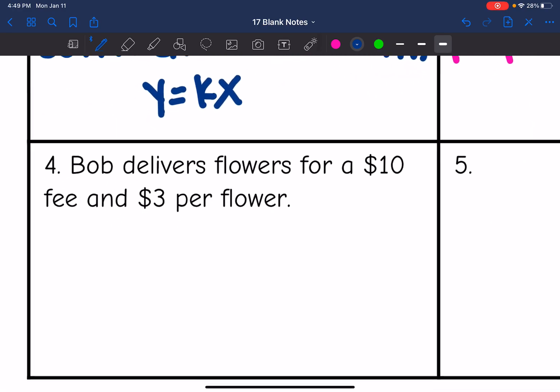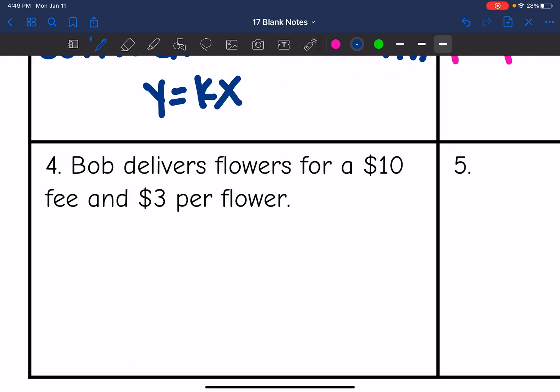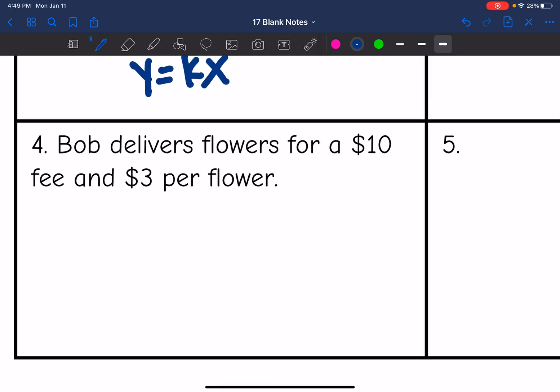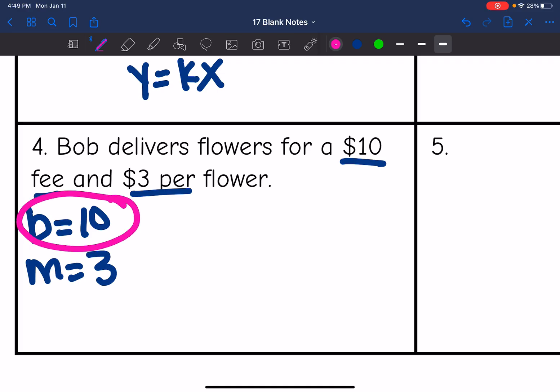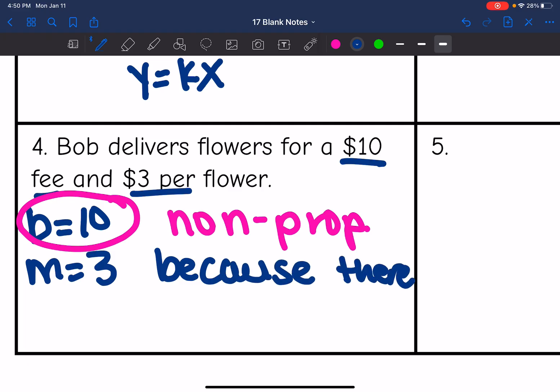Number four. Bob delivers flowers for a $10 fee and $3 per flower. So remember in word problems, we just want that slope, that special k and no b. But this one has a b. We have a $10 fee. That would be the y-intercept. And then we do have a slope. But since we have a y-intercept here, this one would be non-proportional because there is a b value.